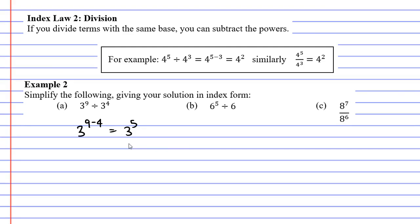Now, moving on to question B, we notice that one of the base numbers does not have a power. That means technically it's got a power of 1, since there is only 1 6. So we're going to go 6 to the power of 5 minus 1, which gives us 6 to the power of 4.